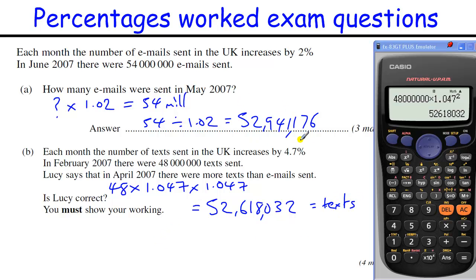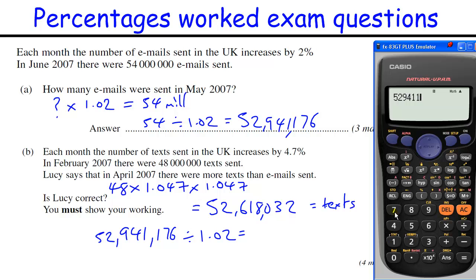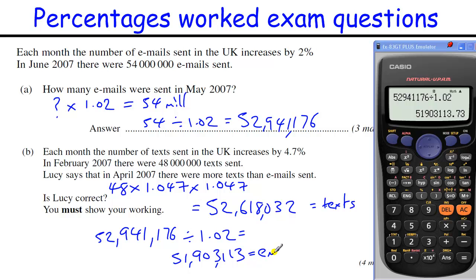Now we have the value for the emails in May. We're trying to figure out what's happening in April, so we need to divide 52,941,176 by 1.02 again to get 519 — so there were fewer emails, confirming this is correct because there are more texts.